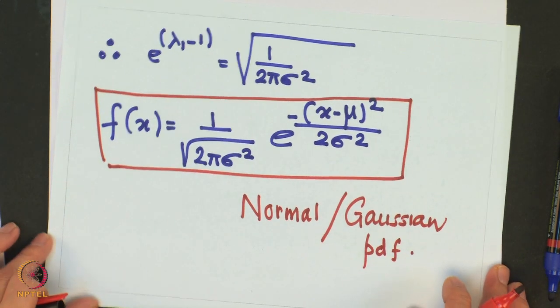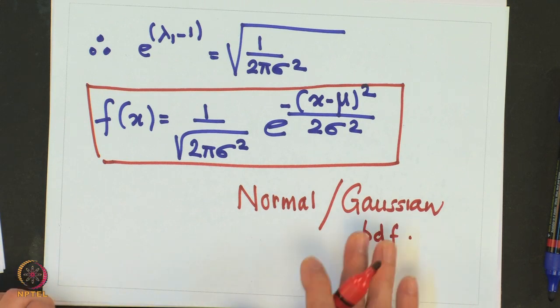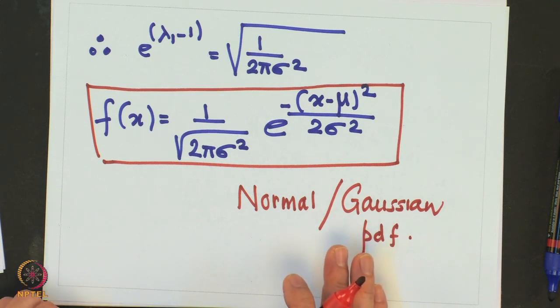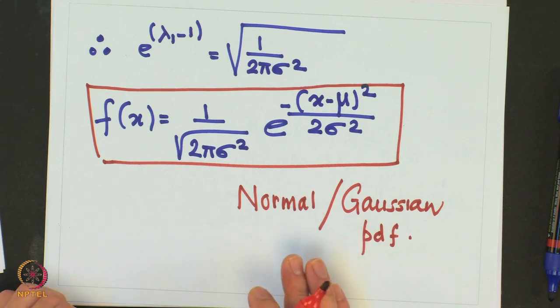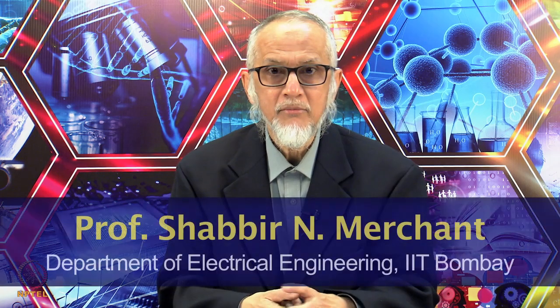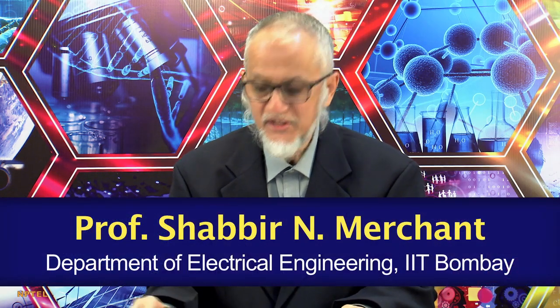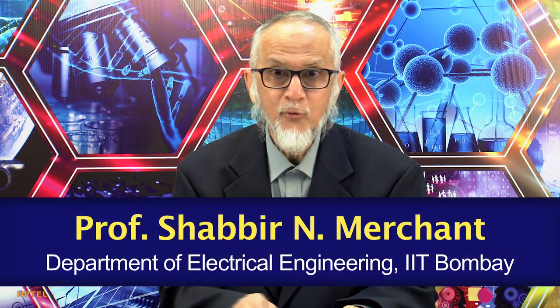So this Gaussian pdf will maximize the differential entropy h(x) given that the variance of the random variable is fixed to sigma-squared. We will continue this discussion in the next class, where we will find out what the differential entropy of this normal or Gaussian pdf actually equals. Thank you.